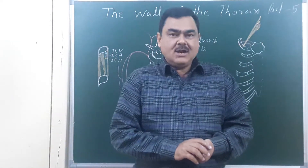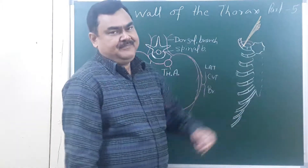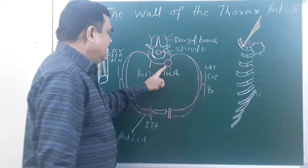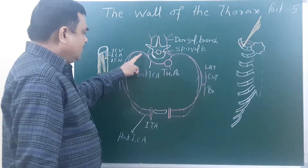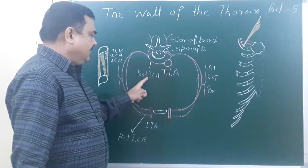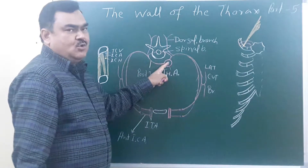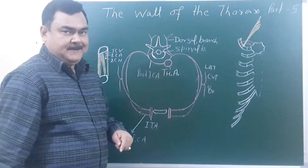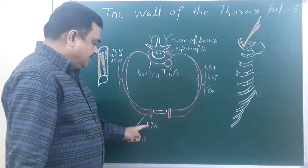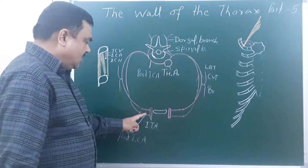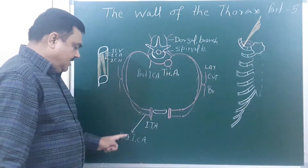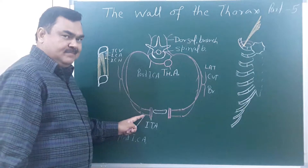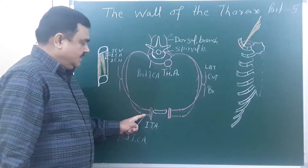Now we discuss the wall of thorax, part 5. In part 4 you saw the posterior intercostal artery, which arises from the thoracic aorta, and its branches. Here is the internal thoracic artery, which gives the anterior intercostal artery. There are two anterior intercostal arteries present in each intercostal space.